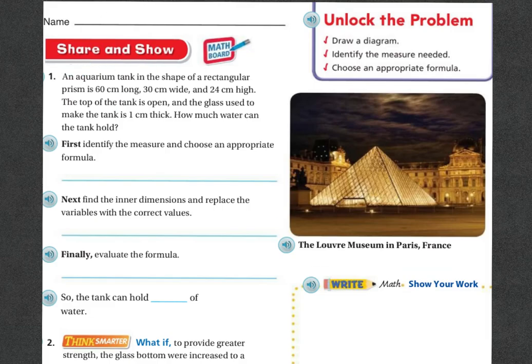Share and show. An aquarium tank is the shape of a rectangular prism, 60 centimeters long, 30 centimeters wide, and 24 centimeters high. The top of the tank is open and the glass used to make the tank is one centimeter thick. How much water can the tank hold? First, we have to identify the measure and then choose an appropriate formula. Since we're trying to fill the tank, we know that we're going to need volume. And since it's a rectangular prism, we know that it's going to be length times width times height is going to be our formula to get volume.